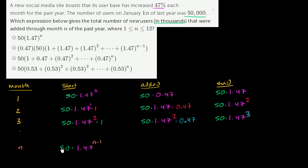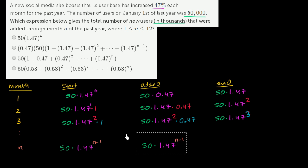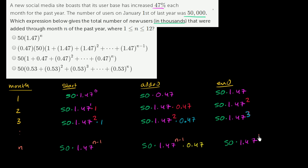50 times 1.47 to the (n − 1) power is what we start the nth month with. What do we add in the nth month? It's going to be that times 47%, so times 0.47. And what do we end with? When you add those two things, you get 50 times 1.47 to the nth power.